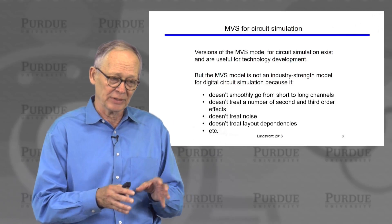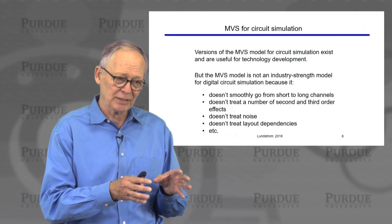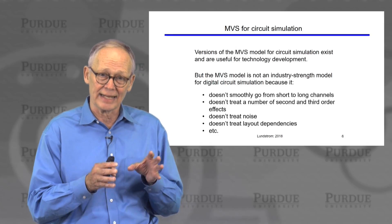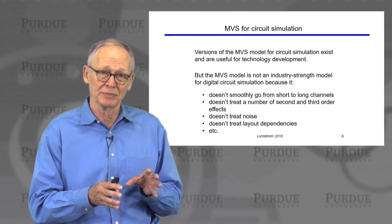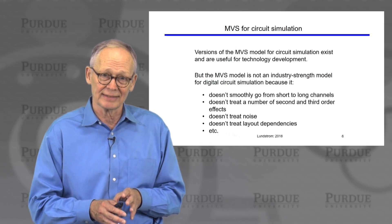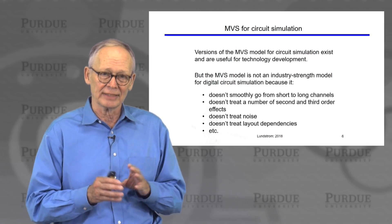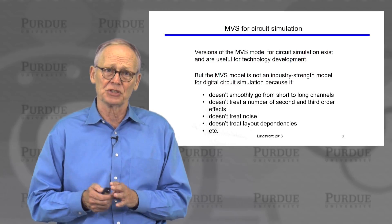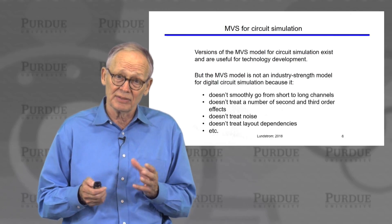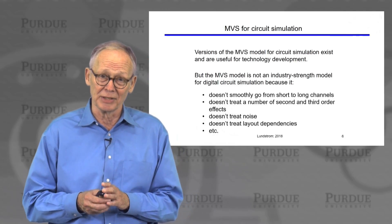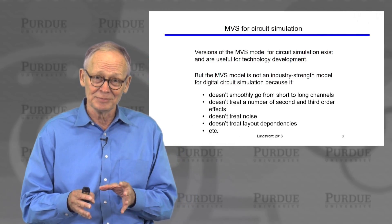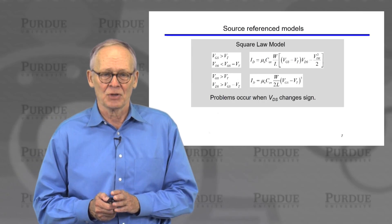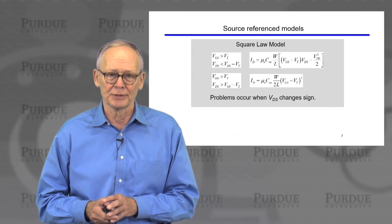It's very difficult for a company that is committed to one particular model, has calibrated their manufacturing process, and has been using it for a long time to switch to another model — even if it turns out to be better. It's done, but infrequently, and only when it's important.